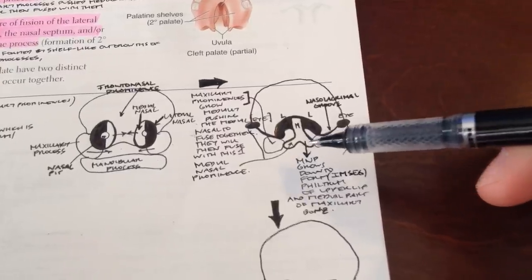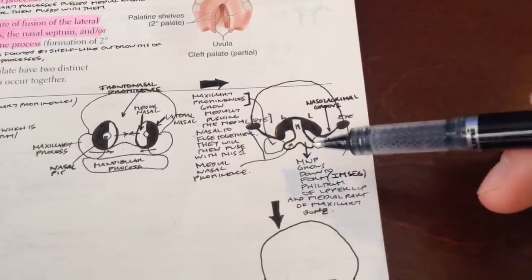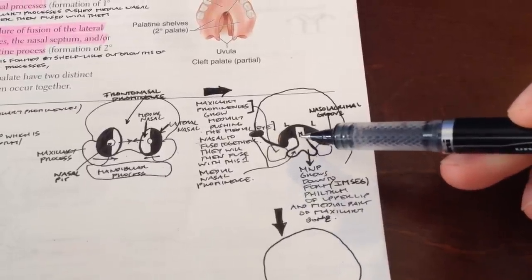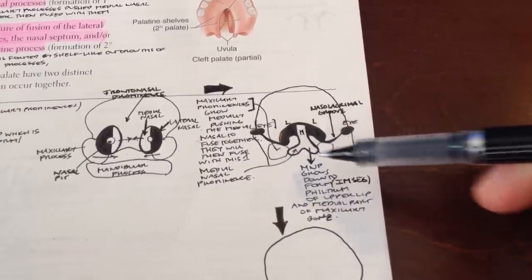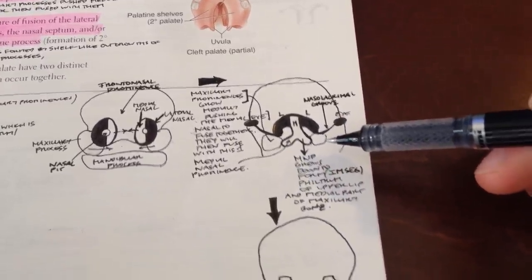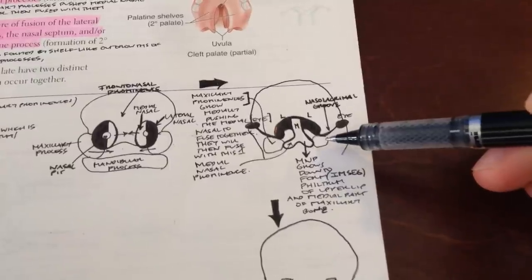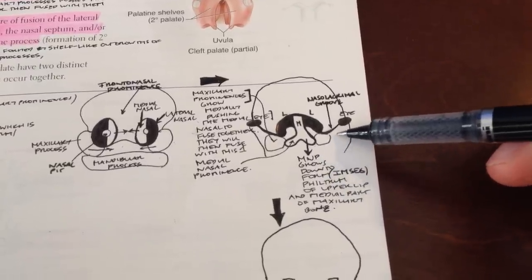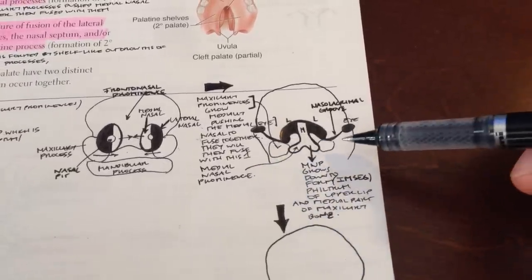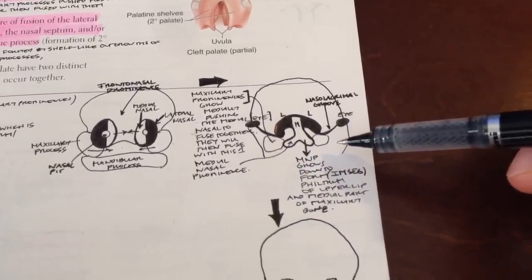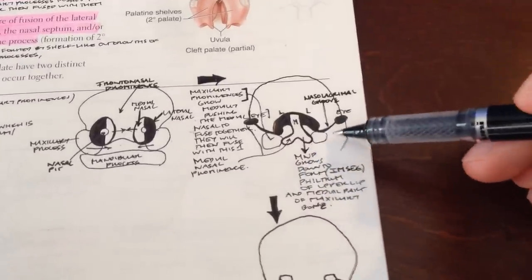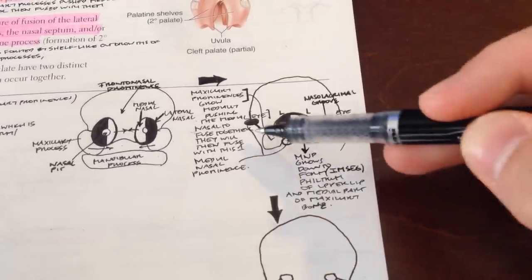What forms the lateral part of the maxillary bone? It's whatever was lateral to those medial nasal processes — that's the maxillary prominences or processes. As you can see, these form the lateral parts of the upper jaw and the lateral part of the upper cheek.